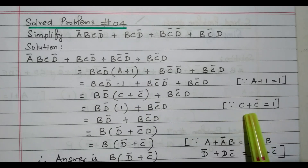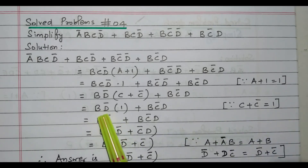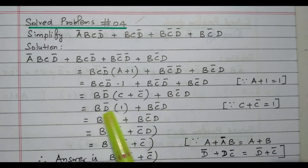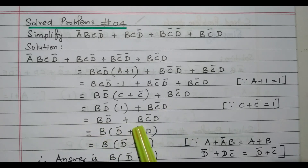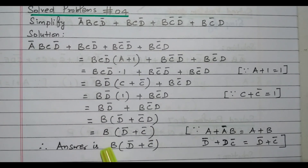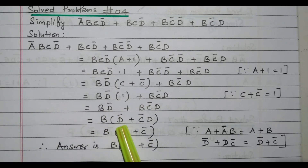So we have bd̄(c + c̄) + bc̄d. What is c + c̄? c + c̄ equals 1 — a number with the complement of itself always gives 1. So bd̄ · 1 + bc̄d, which simplifies to bd̄ + bc̄d. Now we can go for further simplification.